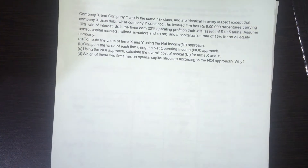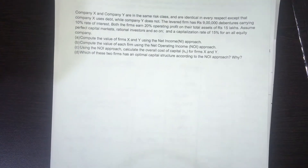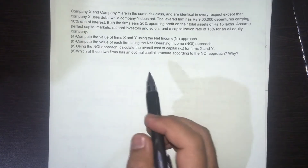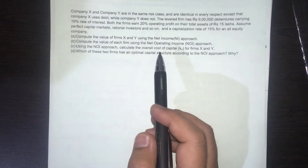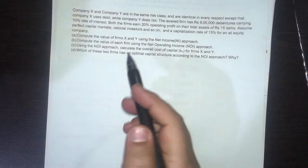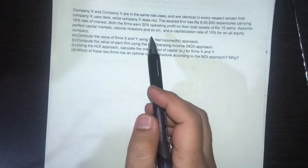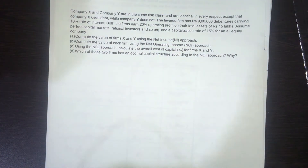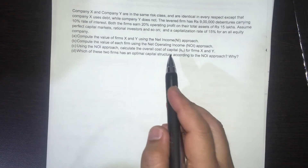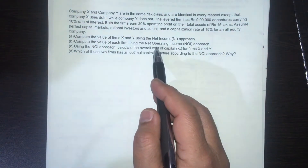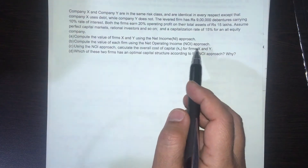Welcome back. In this video we are going to look at another capital structure problem, which is similar but also different from the previous two capital structure videos posted earlier. We are going to find out the value of the firm as well as all the other capitalization rates — KE and KO — using both the net income approach as well as the net operating income approach.